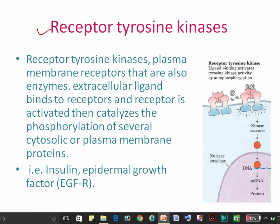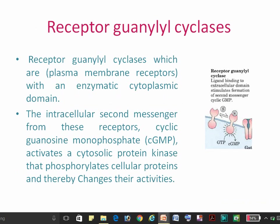The second one is receptor tyrosine kinase, in which a ligand binds to the extracellular domain of the receptor and the receptor catalyzes the phosphorylation of cytosolic or plasma membrane proteins. Examples of this receptor include insulin and epidermal growth factor receptors.